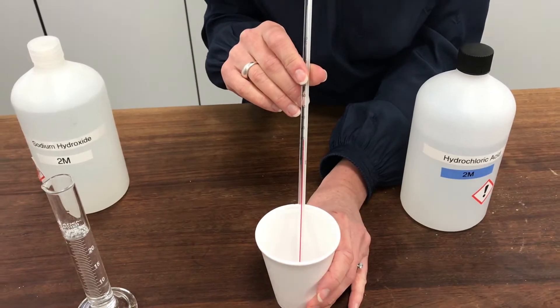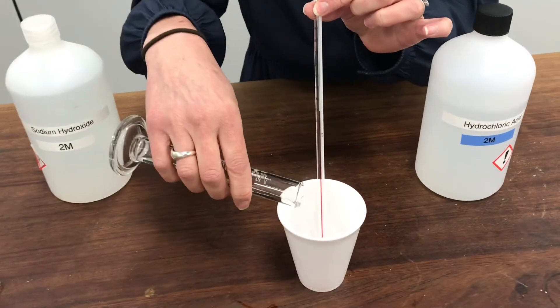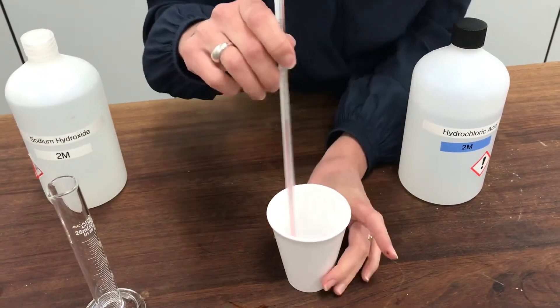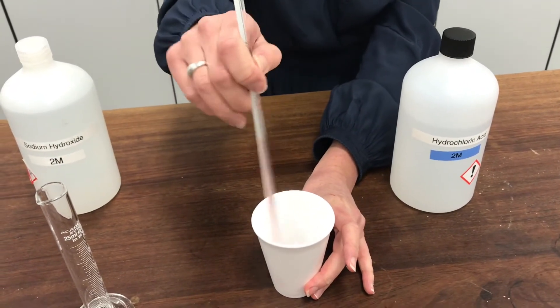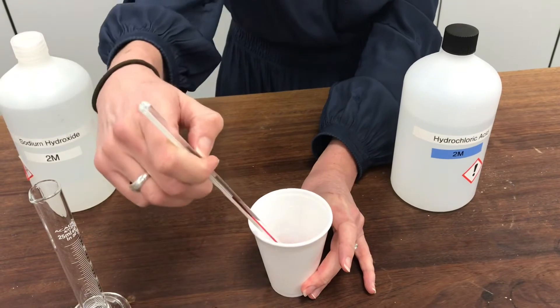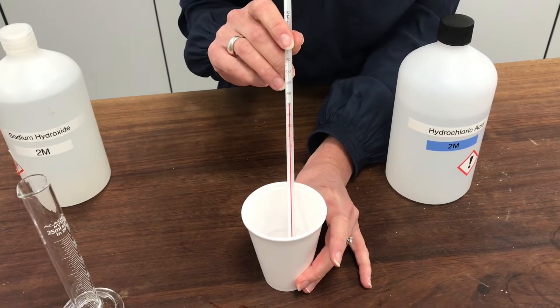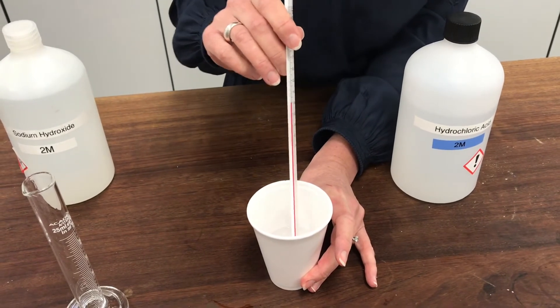Okay, so I'm now going to add my alkali to it and watch what happens to the temperature. Stirring as usual to make sure the heat's distributed evenly through the liquid. And you can see there has been quite a temperature change already. Let's see if we can see what the maximum temperature change is.